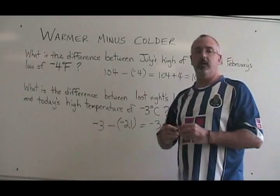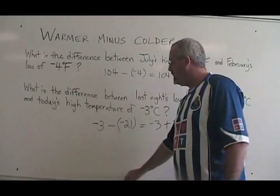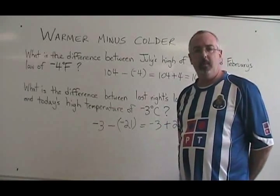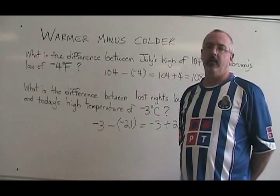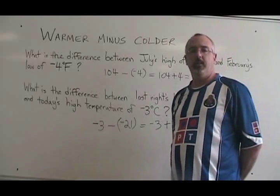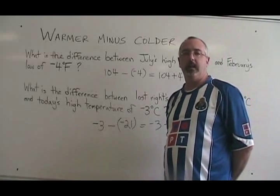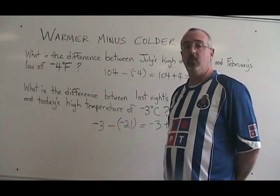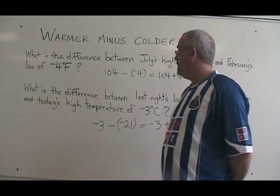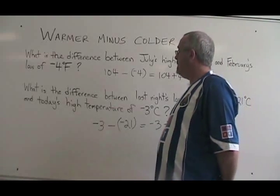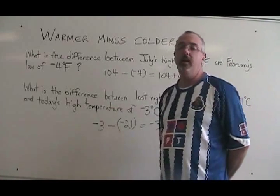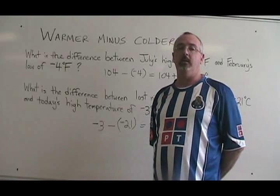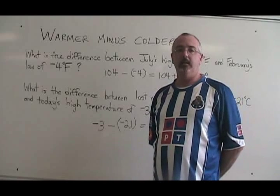The warmer minus colder method always works, even if both temperatures are positive, both are negative, or one is positive and the other is negative. You just have to remember: figure out which is the warmer temperature, put it first, then a minus sign, then the colder temperature including its sign if it has one, and then solve it.